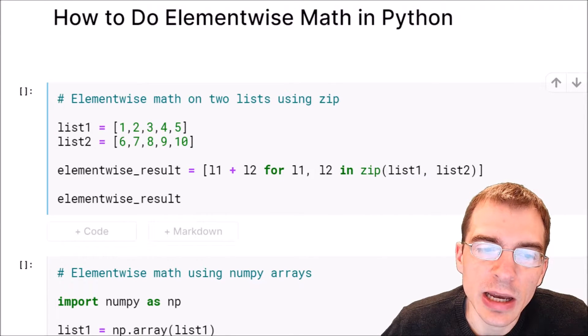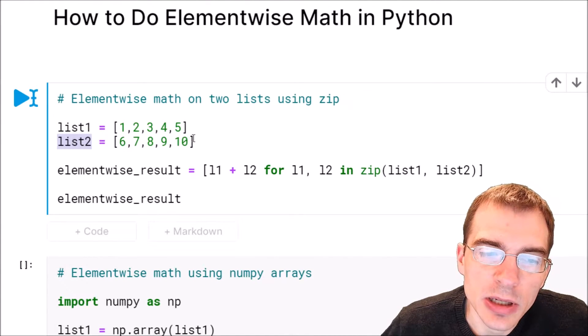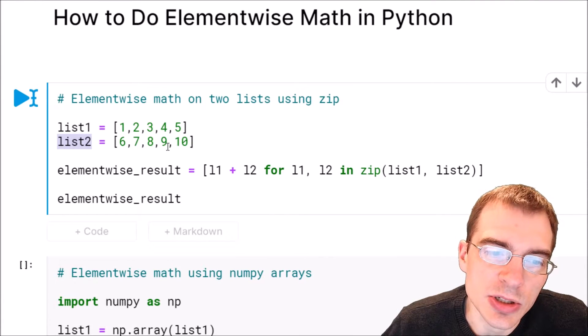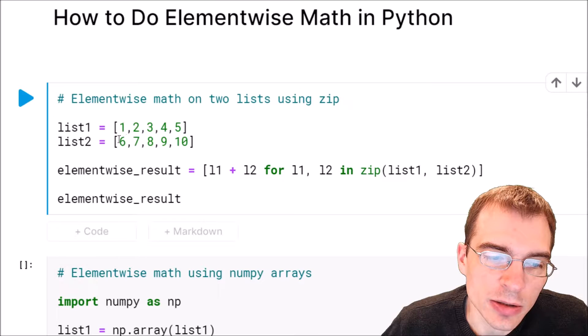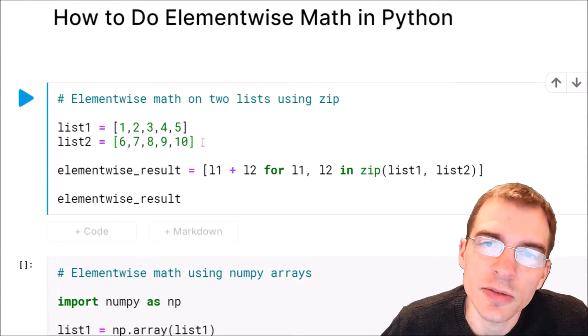For instance, if we have two lists like this—list 1 and list 2—that have the same number of elements, we might be interested in performing math on each element based on their index position. For instance, adding 1 to 6, 2 to 7, 3 to 8, and so on for two lists that are of the same length.